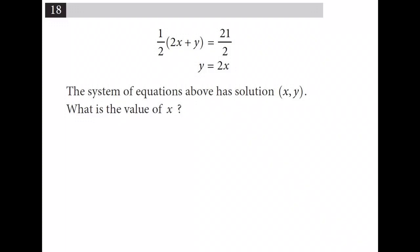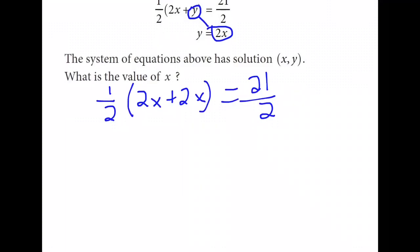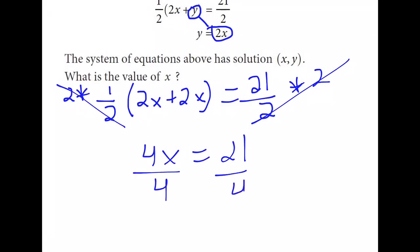Because this second equation has a coefficient of 1 in front of the y, we can use substitution quite easily. We're going to replace the y in the first equation with what it's equal to in the second equation. This gives us the equation 1 half times the quantity 2x plus 2x is equal to 21 divided by 2. I'm noticing that both sides are being divided by 2. I could multiply by 2 on both sides and cancel that out. I'm left with, on the left side, 4x and on the right side, 21. When I divide both sides by 4, my final answer is 21 over 4.